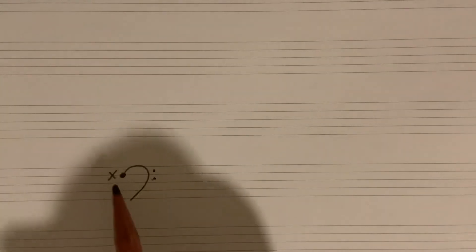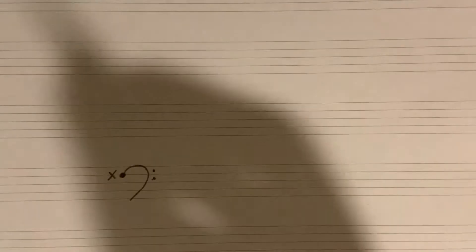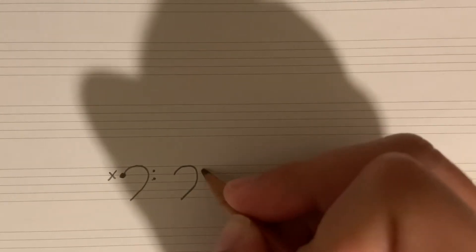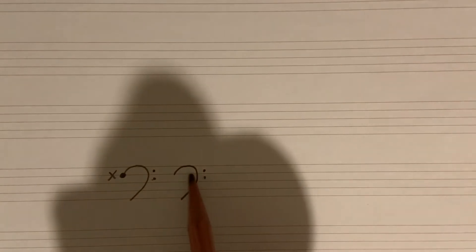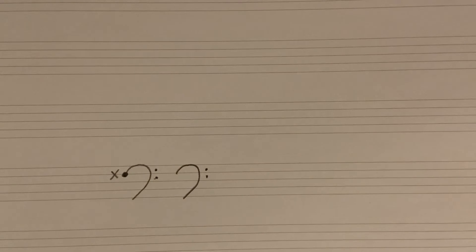Now this dot here is not always necessary, so you can choose to forget about it if you'd like. But the important part is that the shape starts on the second line from the top here. So we're going to go loop around, and then we draw our two dots on either side of this line here. So again, this line is very important to this clef. We start on it, and then we draw two dots on either side. If you need to pause the video to try it a couple times, feel free to do that, but we're going to keep moving here.